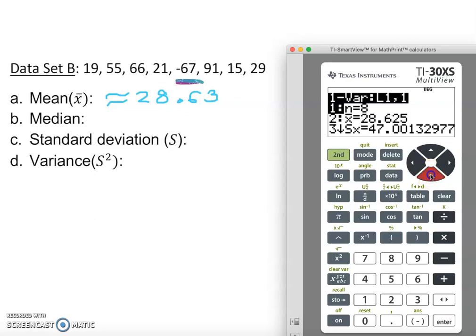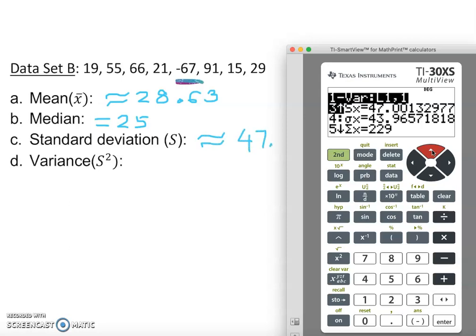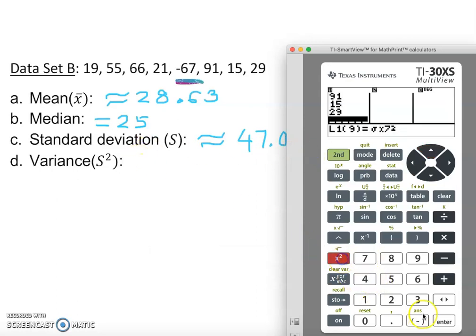Next one we look for median. Here you go. What is the median? Median is 25, equal to 25. Then you go for standard deviation. Where is that? That's the standard deviation, 47.00, approximately 47.00.